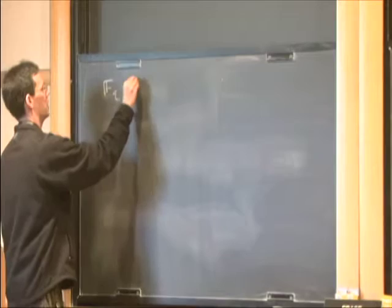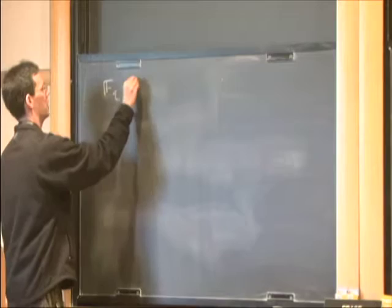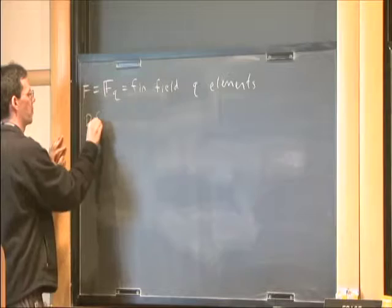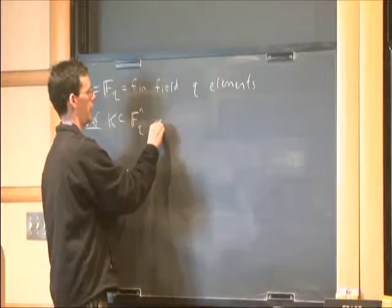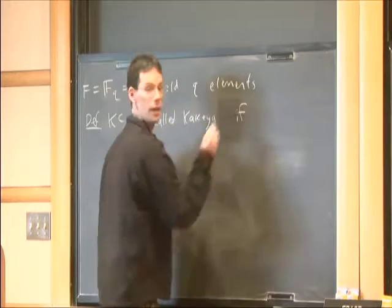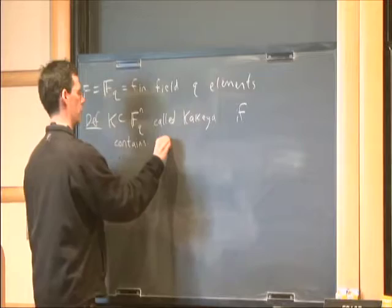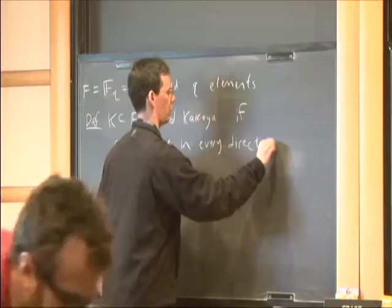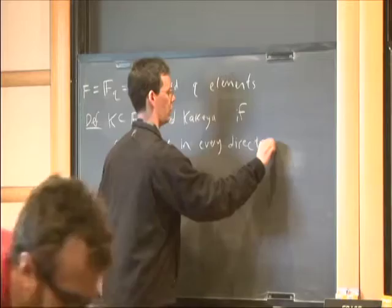Suppose FQ is the finite field with Q elements, which I'll just write as F. And then if I have a set in the vector space FQ^N, this is called a Kakeya set if it contains a line in every direction. The finite field Kakeya problem asks: how big does a Kakeya set have to be?